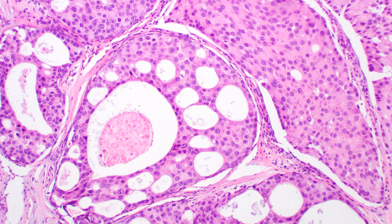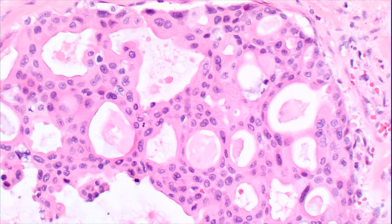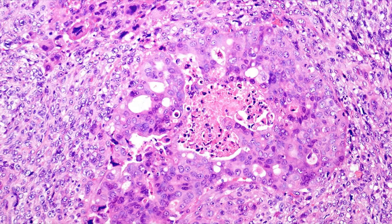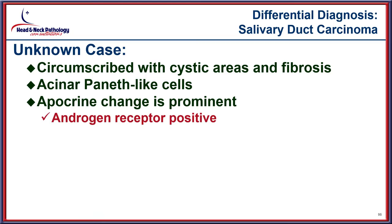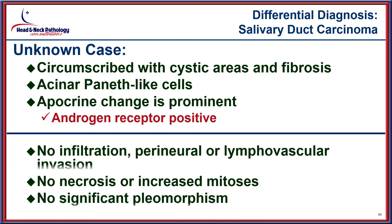Roman bridge formation is usually easily seen throughout, with a punched-out appearance at higher power. Pleomorphism and apocrine change are prominent throughout. Androgen receptor is usually strongly and diffusely positive — useful both diagnostically and therapeutically via androgen deprivation therapy. In our case there was no infiltration, no perineural or lymphovascular invasion, no necrosis, and no significant pleomorphism, so salivary duct carcinoma is excluded.